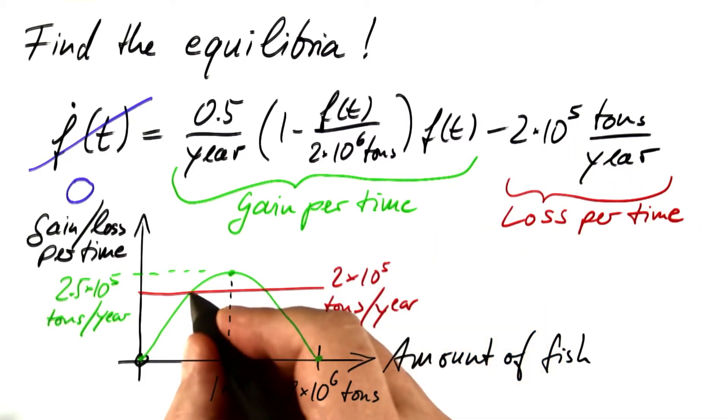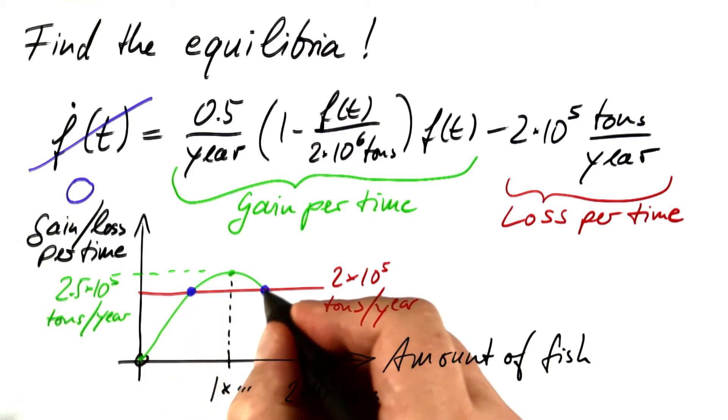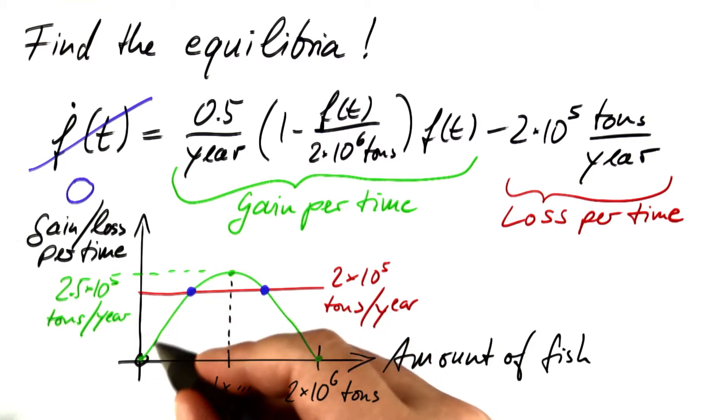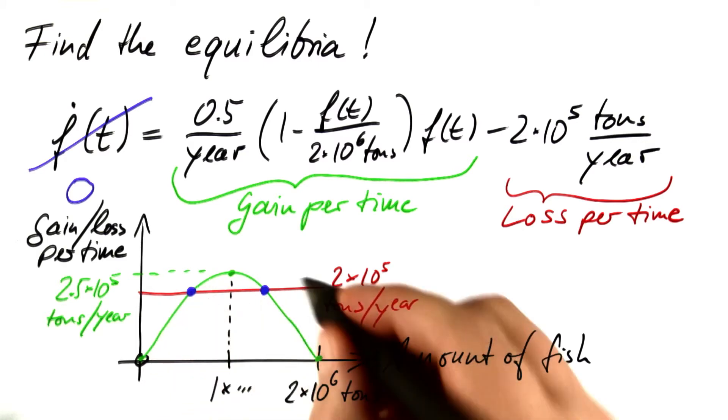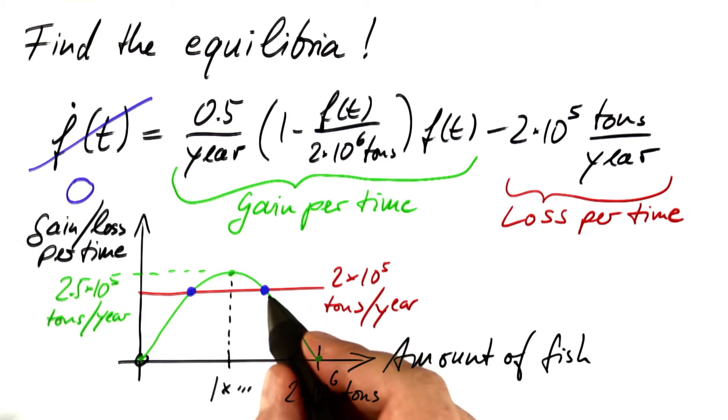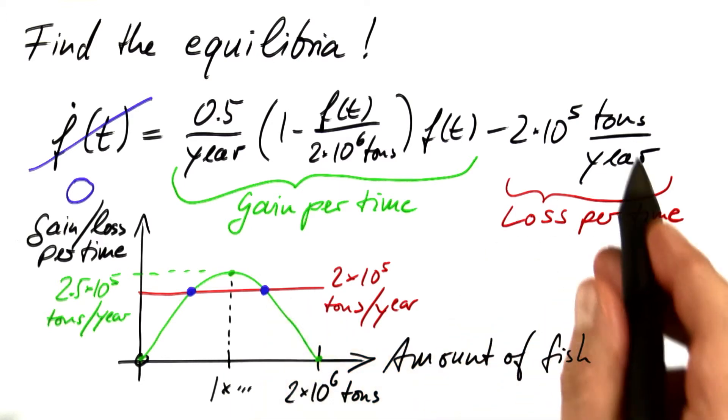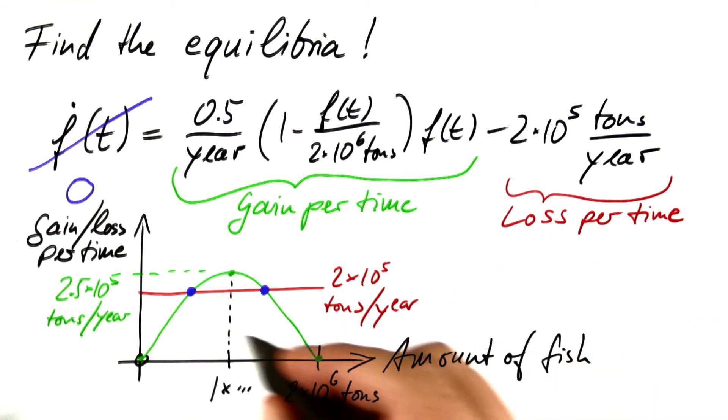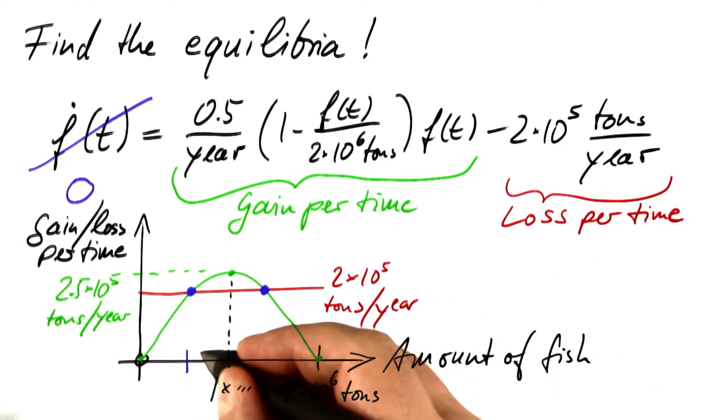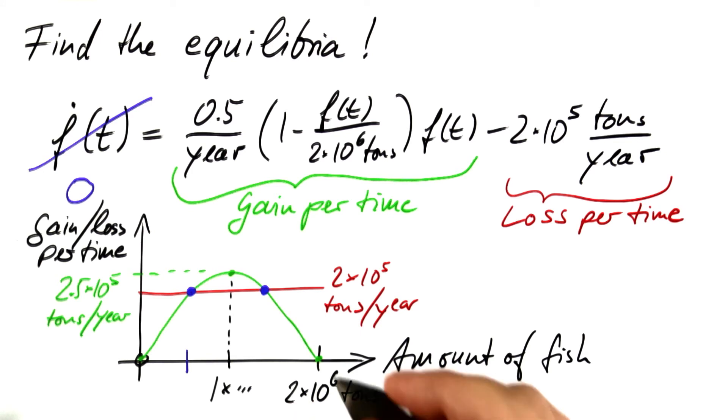So we have one equilibrium here and one equilibrium there. At both of these points, the gain and the loss balance each other. If you want to, you can solve this quadratic equation to find that this equilibrium sits at 0.55 times 1 million tons and this equilibrium sits at 1.45 times 1 million tons.